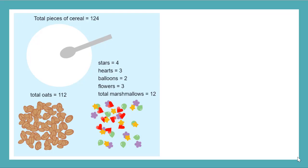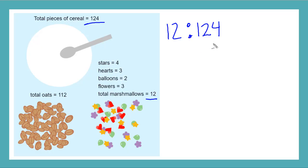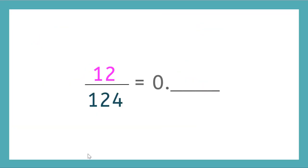Let's think about how we can relate ratios to fractions. Let's write the ratio of marshmallows to total cereal — that gives me 12 to 124. Now let's write this ratio as a fraction of marshmallows to total cereal: 12 over 124. Now that I have my ratio as a fraction, I can convert this fraction to a decimal. Remember, we do that by dividing the numerator by the denominator. I'll use my calculator to help. And we get a decimal that looks like 0.096.